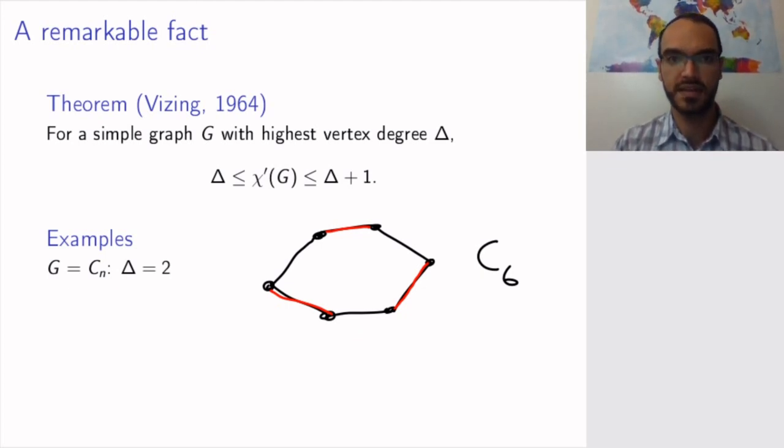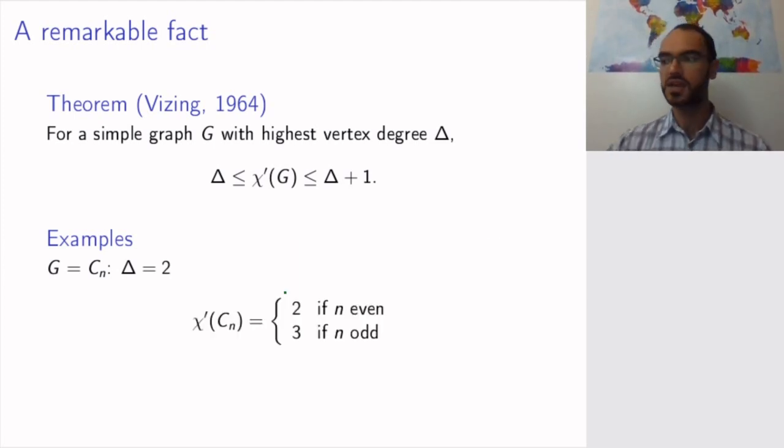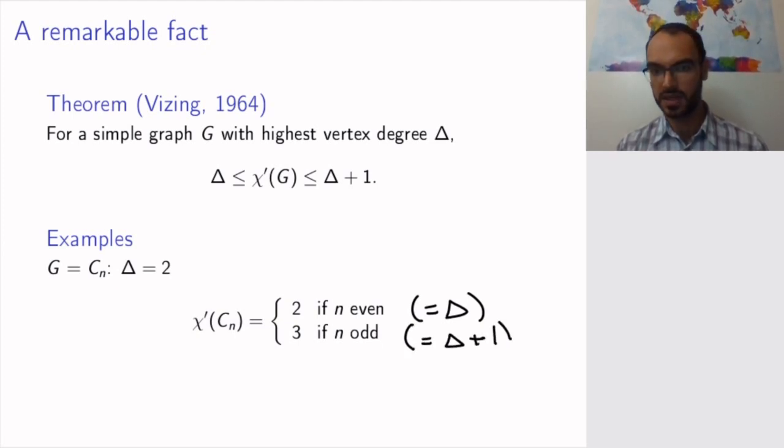But if I had an odd number of vertices so now I have C7, then in the end I will need a third color in the same way that we discussed for vertices. So this will be three edge colorable. To summarize, if n is even the number of colors required for the edges, the chromatic index is equal to the highest degree which is 2. And if n is odd then we are equal to Δ+1. So both cases that are advertised by Vizing's theorem occur already for simple graphs.